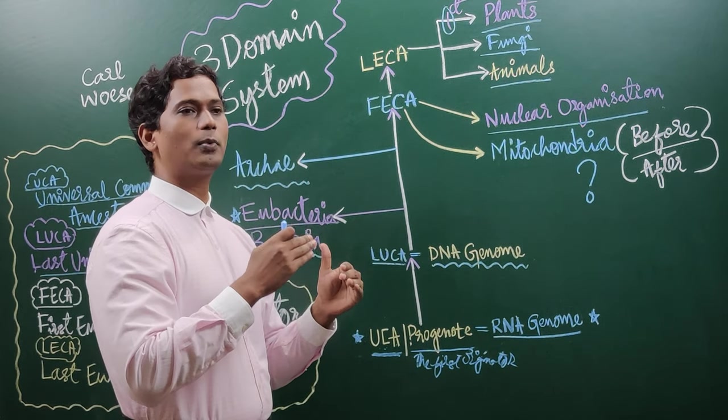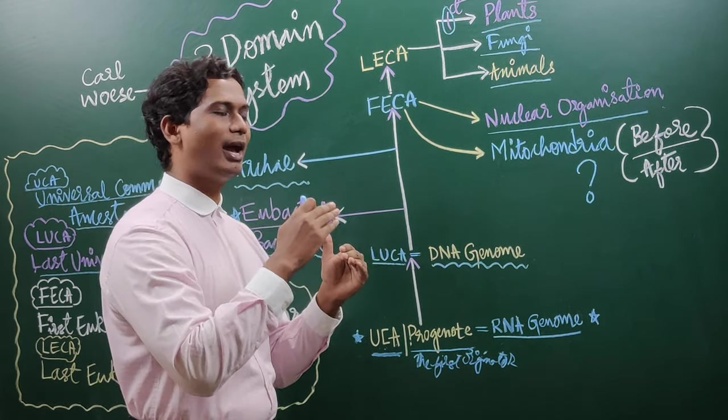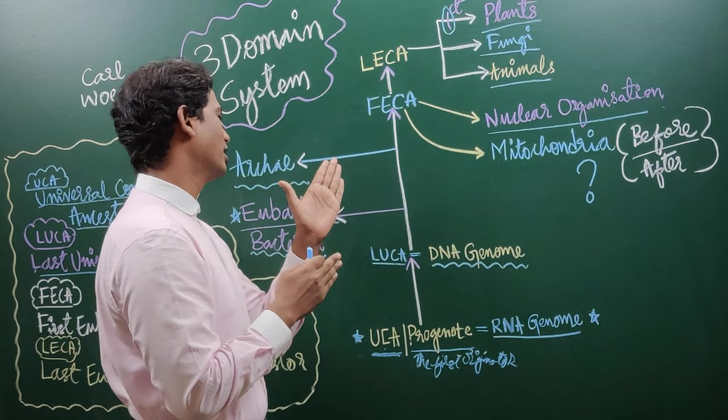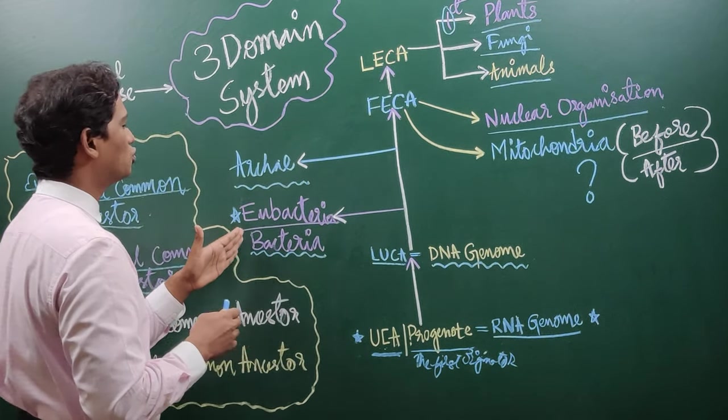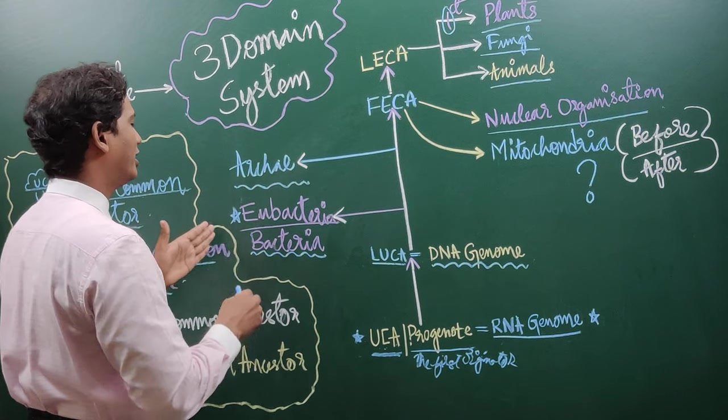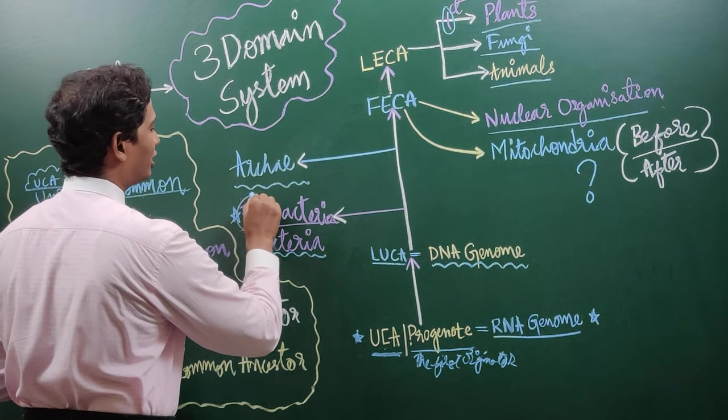From here, what happened is, LUCA slowly started progressing, step by step, and it gave one branch and gave rise to one organism which we usually call it as bacteria, and it is technically called as eubacteria.